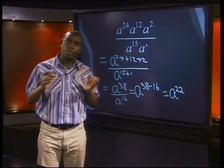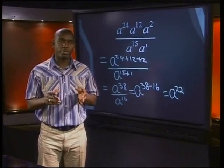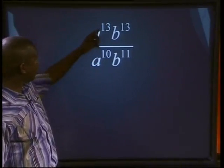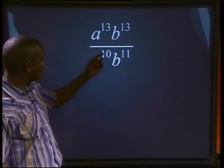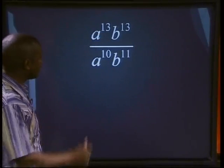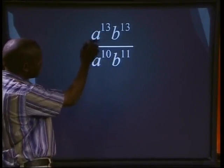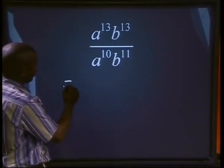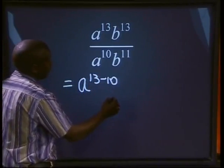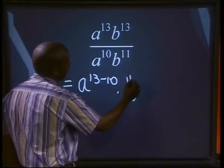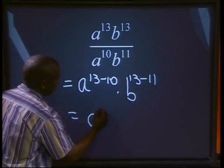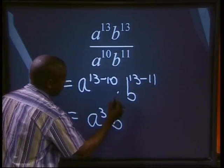The laws make it easy for us to simplify expressions containing powers. Can you simplify this one? We have a to the power of 13, b to the power of 13, divided by a to the power of 10 and b to the power of 11. Since this is division, we subtract the exponents, but we must subtract only the ones with the same bases — a with a, and b with b. That gives us a to the power of 13 minus 10, multiplied by b to the power of 13 minus 11, which equals a to the power of 3 times b to the power of 2.